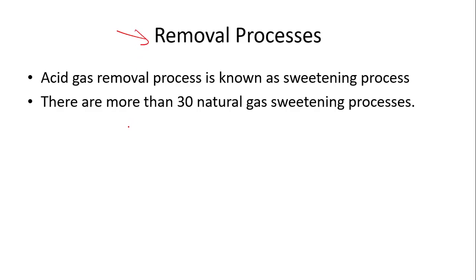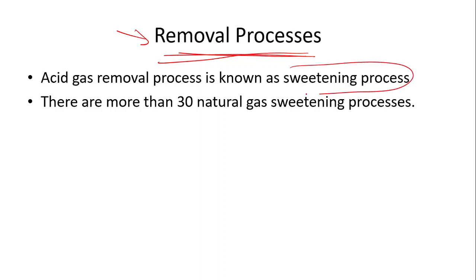In summary, we have to remove acid gases from natural gas. The removal of acid gases is known as the sweetening process. Sweetening means that when sulfur compounds or acid gases are removed from natural gas, it becomes sweet in terms of its odor. That is why we call it the sweetening process.